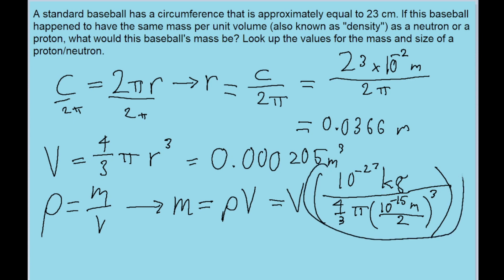So this entire big term that I have here represents the density of the nucleon. So we take all of this and we multiply it by V, the volume that we found previously. And if we do that, we find a value for the ball's mass of about 4 times 10 to the power of 14 kilograms.